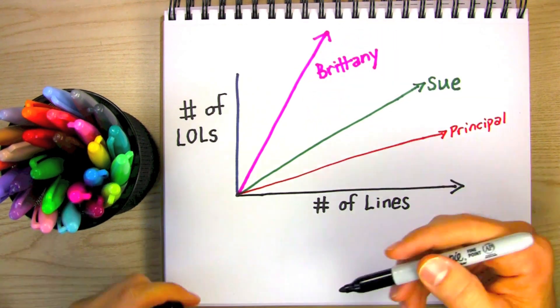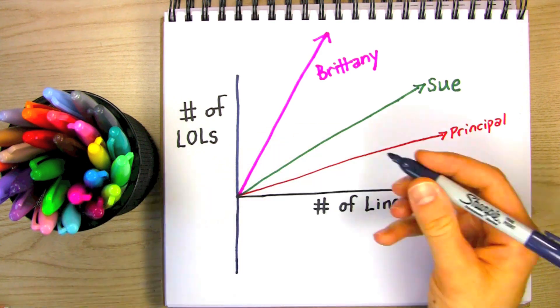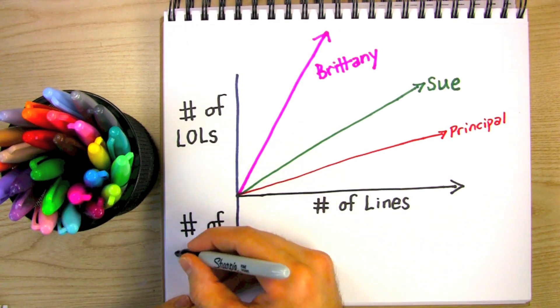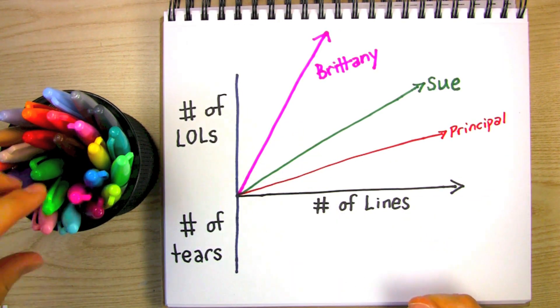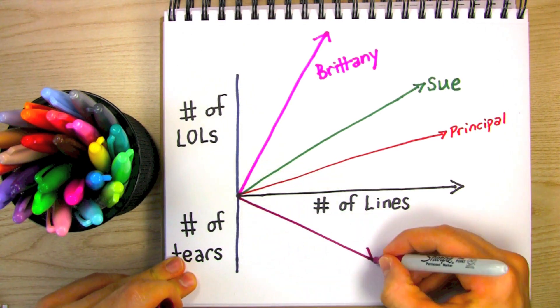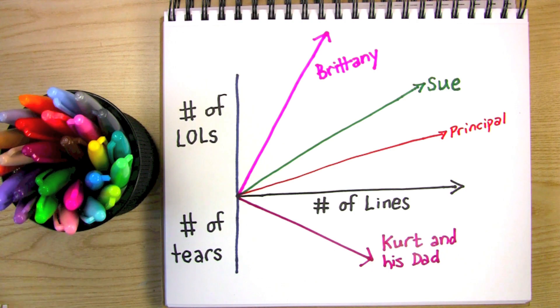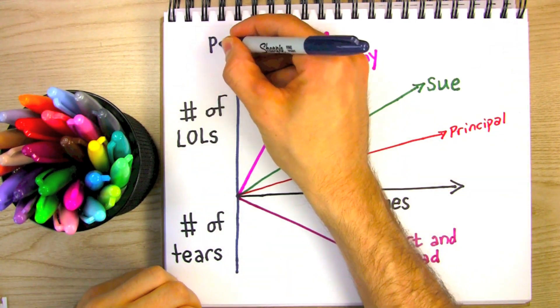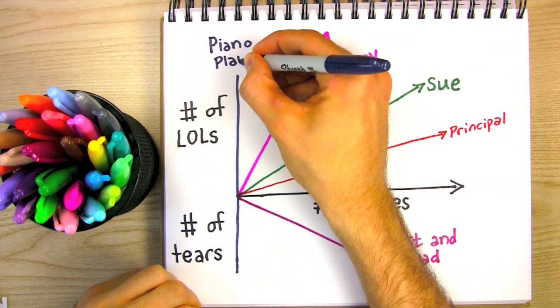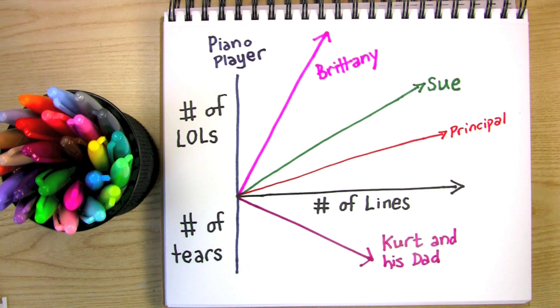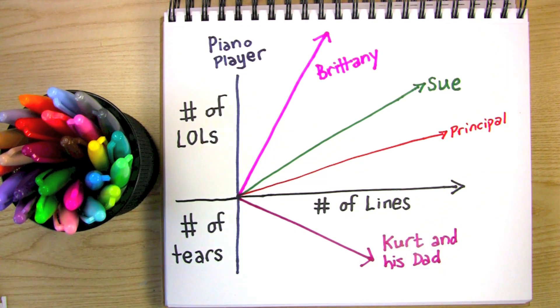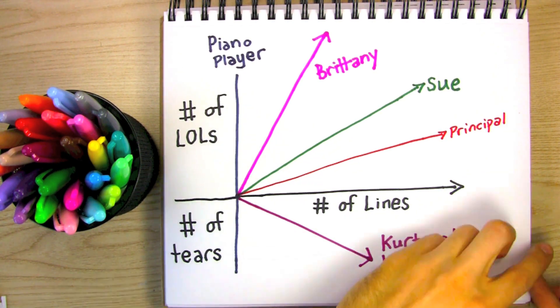Now, the opposite of laughter is crying. And there's also a direct correlation between the number of conversations between Kurt and his dad and the number of times I shed a tear. Yes, people, Glee has made me cry. And side note, the Y-axis also represents the Glee club's semi-creepy bearded piano player because that guy never has any lines.